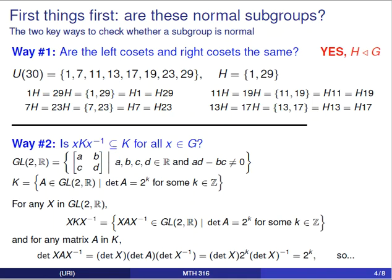To test whether K is a normal subgroup, we can use the normal subgroup test. We take our subgroup K and for every element X in G, we form the set X·K·X⁻¹. The test says that if this set is a subset of the original subgroup K for all X, then K is a normal subgroup of G. So let big X be a matrix in GL(2,R), and for every A in K, we look at the product X·A·X⁻¹ and check whether the resulting set is a subset of K.